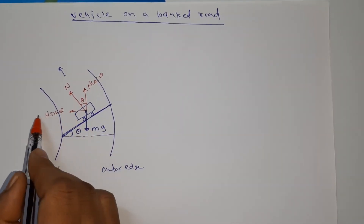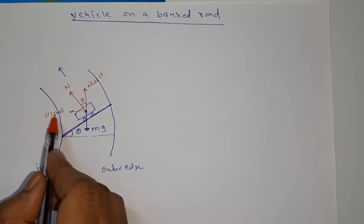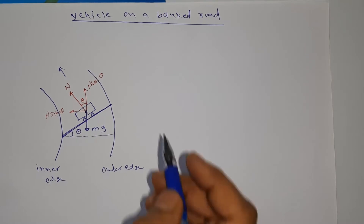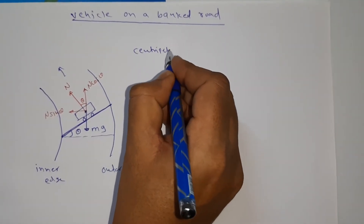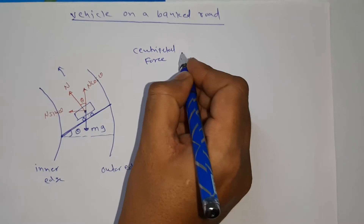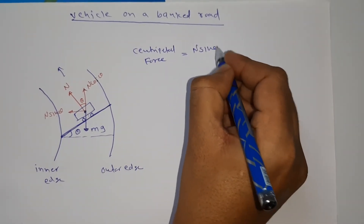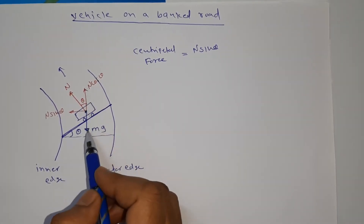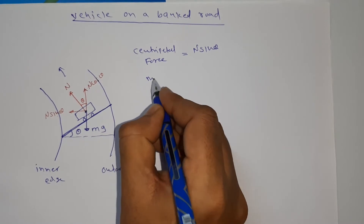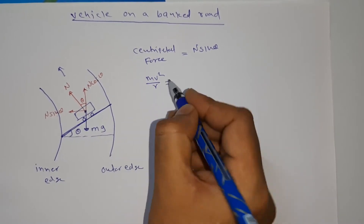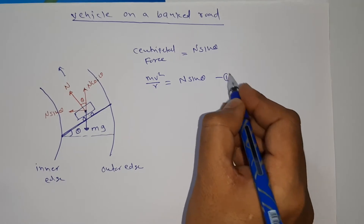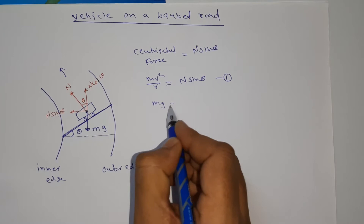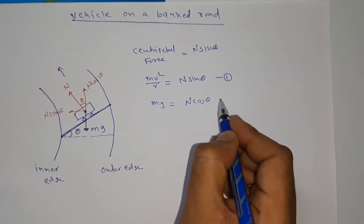Toward the center, the component acting is N sinθ, which provides the centripetal force. N cosθ acts upward and balances the weight mg downward. So centripetal force: mv²/r = N sinθ — equation one. And N cosθ = mg — equation two.